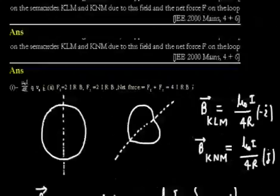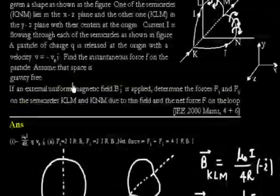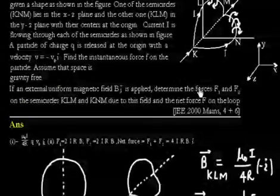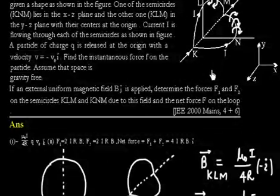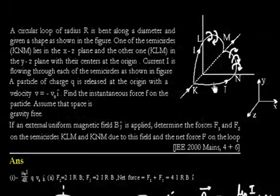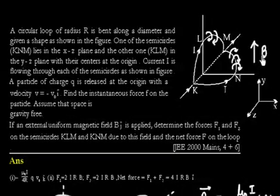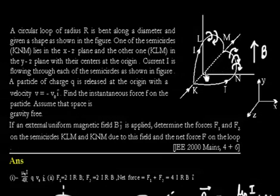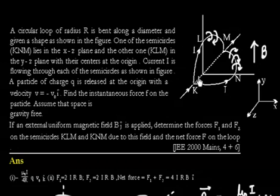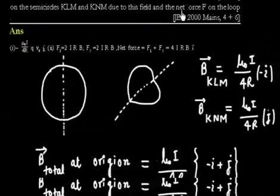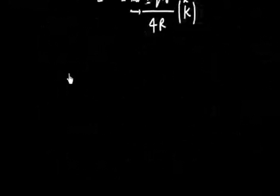Now let us discuss the next part of the question. An external uniform magnetic field Bĵ is applied. We need to determine the magnetic forces F1 and F2 on the two half-loops. We will use a superposition principle. Let us first discuss the KLM loop.